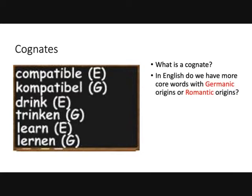In English, do we have more core words with Germanic origins or Romantic origins? We're talking core words — some of those basic everyday objects. If you guessed Germanic, you're right. Most of our core words are Germanic in origin, but our sort of twenty-dollar words are more Romantic. Francophones tend to overuse cognates with Romantic origins, and the problem is that those have particular connotations that are not always appropriate to the context. It can create some confusion, and we'll see how.